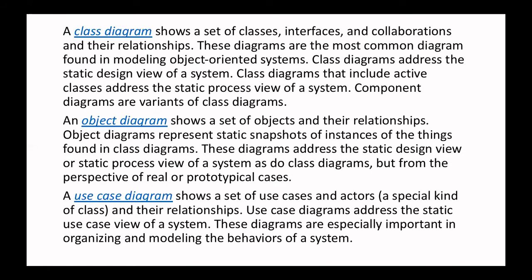Moving to the first: class diagram. A class diagram shows a set of classes, interfaces, and collaborations. It is the most common diagram found in modeling object-oriented systems. Class diagram addresses the static design view of the system. A class diagram that includes active classes addresses the static process view of the system. Component diagrams are variants of class diagrams, showing what classes are used within the software product and their functions and processes.